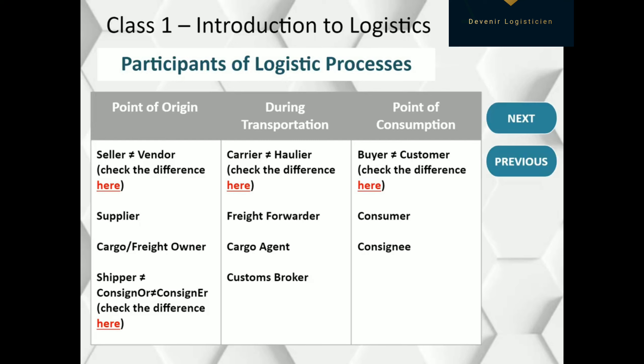There are three words we can use when we want to say грузоотправитель: shipper, consignor with E at the end, and consignor with O. All of them are quite similar.